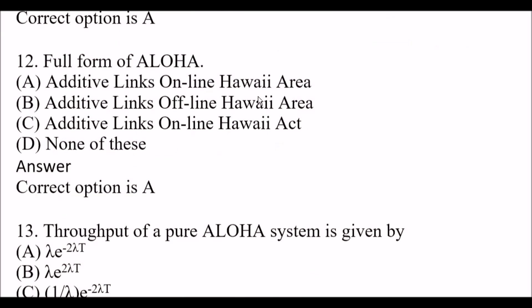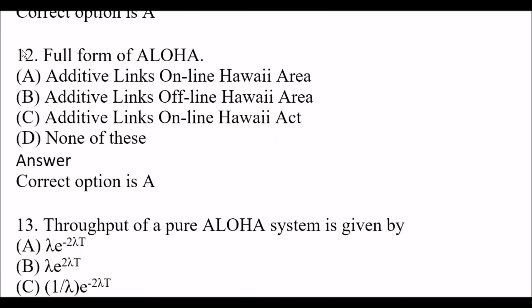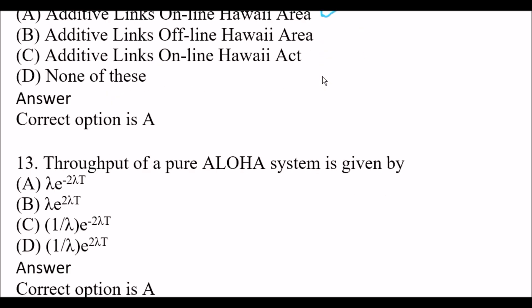Next question: Full form of Aloha. Option A: additive links online Hawaii area. Option B: additive links offline Hawaii area. Option C: additive links online Hawaii act. Option D: none of these. The right answer is Option A, additive links online Hawaii area.